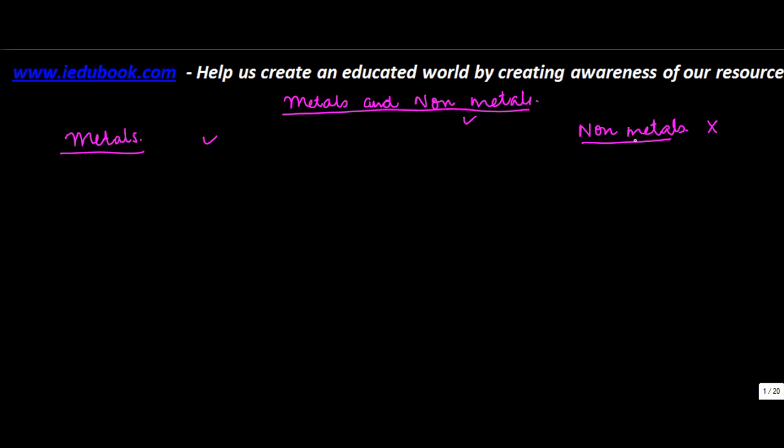Let's take one example of metal and non-metal. Let's take iron as an example of metals and coal as an example of non-metal.